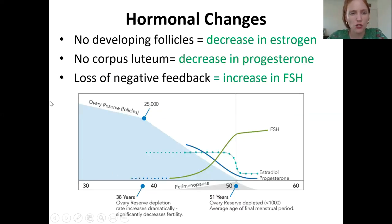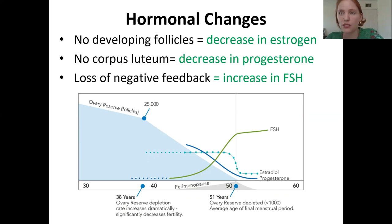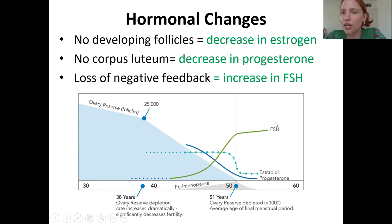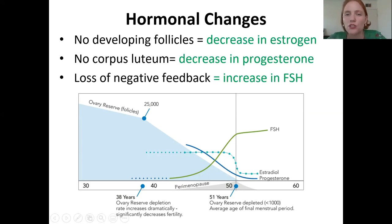When you're born you get all your follicles, and as you get older you'll be using up the last of them. Remember that the follicles — the cells surrounding the oocytes — produce estrogen. So when you're out of follicles, estrogen levels decline. When estrogen levels decline, you lose the negative inhibition of follicle stimulating hormone, and so FSH levels are going to go up.